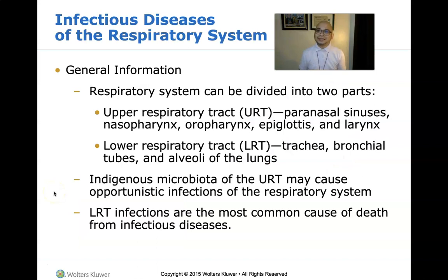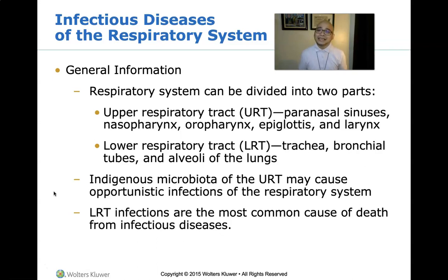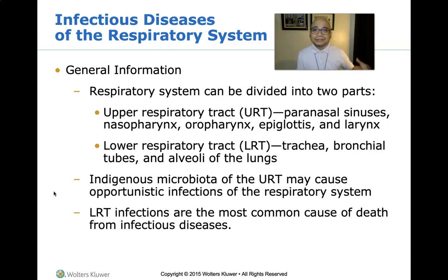Regarding infectious diseases of the respiratory system, the respiratory system is divided into two parts. The upper respiratory tract includes the paranasal sinuses, nasopharynx, oropharynx, epiglottis, and larynx. The lower respiratory tract includes the trachea, bronchial tubes, and the alveoli of the lungs.